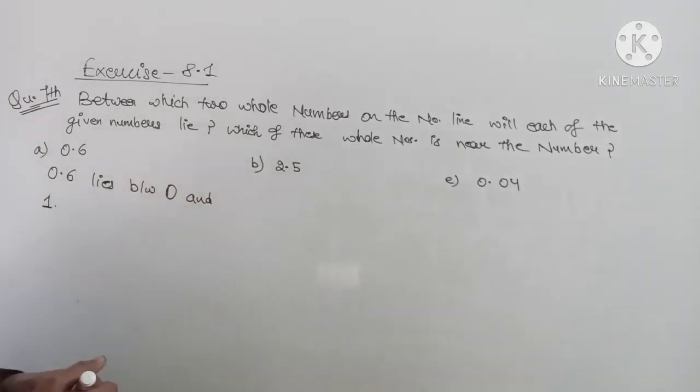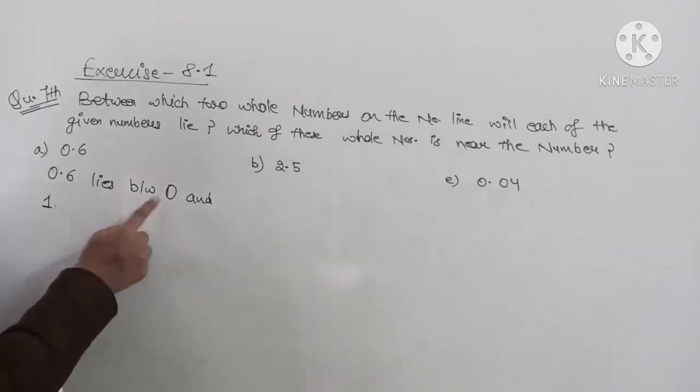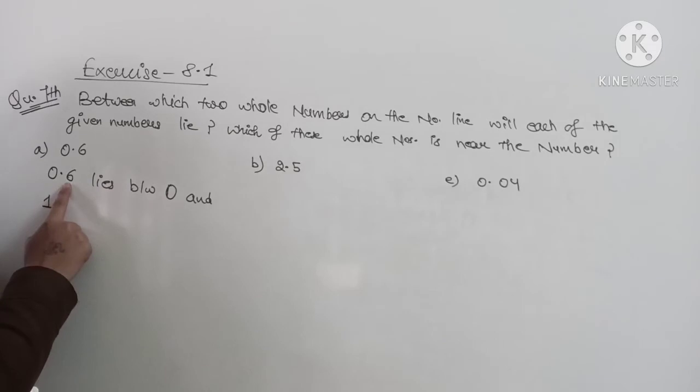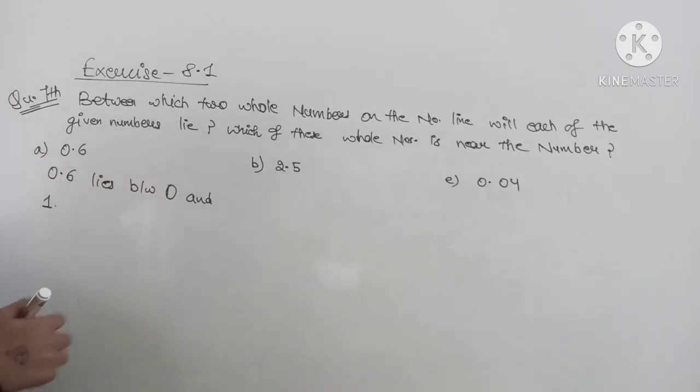Now which of these whole numbers is near the number? Out of 0 and 1, which is near 0.6? 0.6 is near to 1. How?